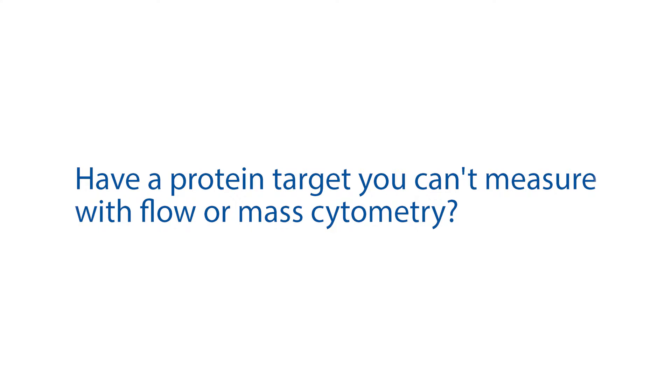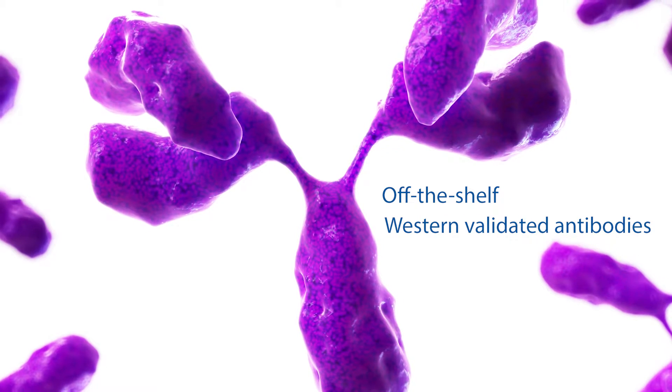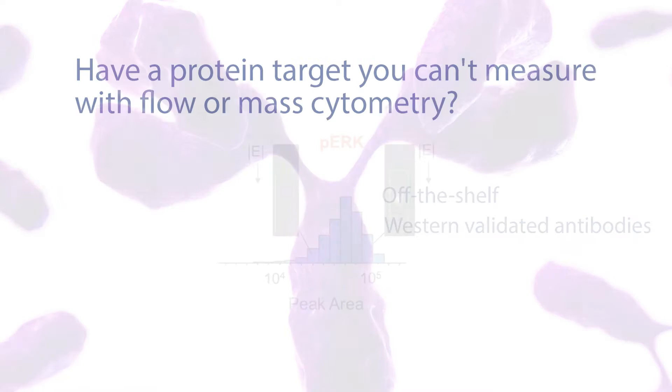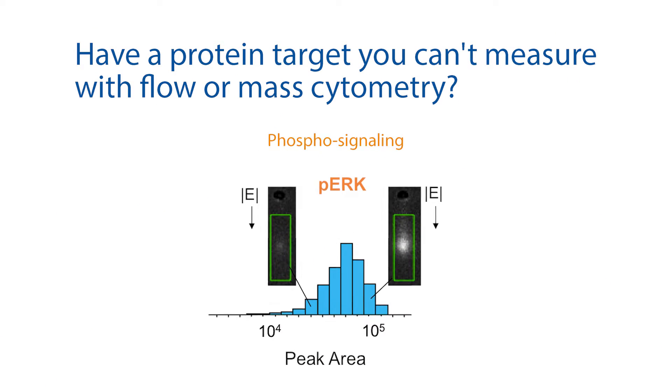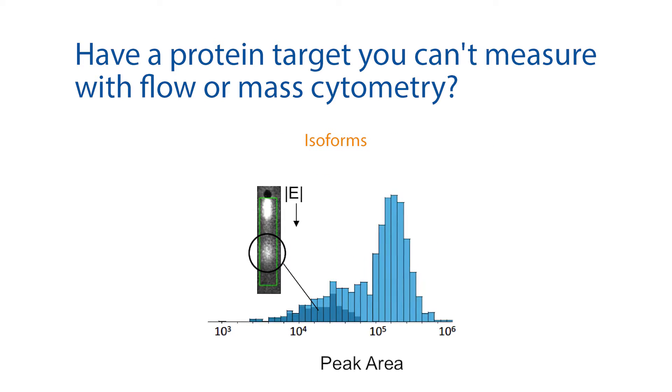Have a protein target you can't measure with flow or mass cytometry? MILO uses off-the-shelf Western-validated antibodies to measure targets that don't have good flow antibodies and can easily quantify intracellular proteins like phosphorylated proteins, transcription factors, or protein isoforms.